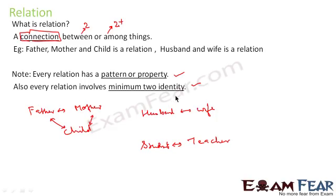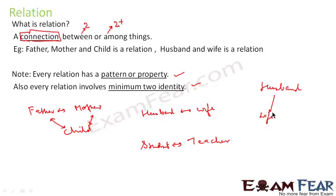Every relation has a pattern or property. Husband and wife has a pattern; student and teacher has a pattern; father, mother, and child has a pattern. Also, for a relation to exist it should have a minimum of two entities. I can't say 'husband has a relation' when only husband is mentioned — I should say husband's relationship with wife or with a child. You need a minimum of two entities for a relation to exist.